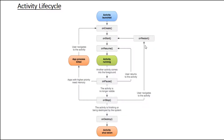After onRestart finishes, the system calls onStart, then onResume, and the activity comes to the foreground. If an app with higher priority needs memory — that is, if the system needs more memory — the Android system kills the process in which your activity is running.